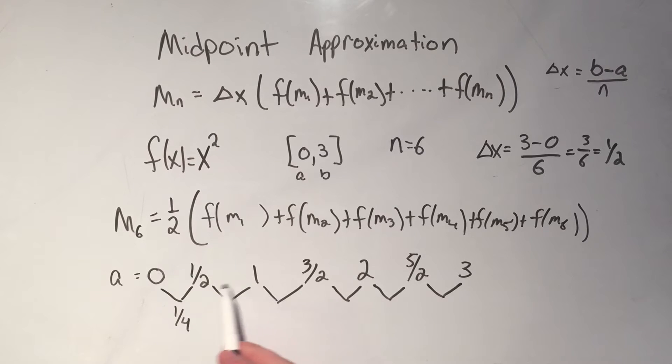Here, the average between 1 half and 1, that's, let's see, that's going to be 3 fourths. The average between 1 and 3 halves, and you can do this with a calculator if you want, if you want to check me.